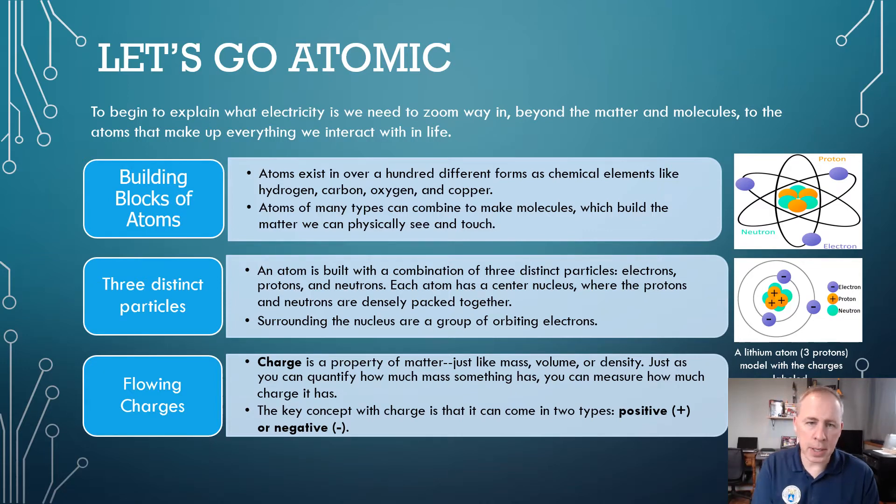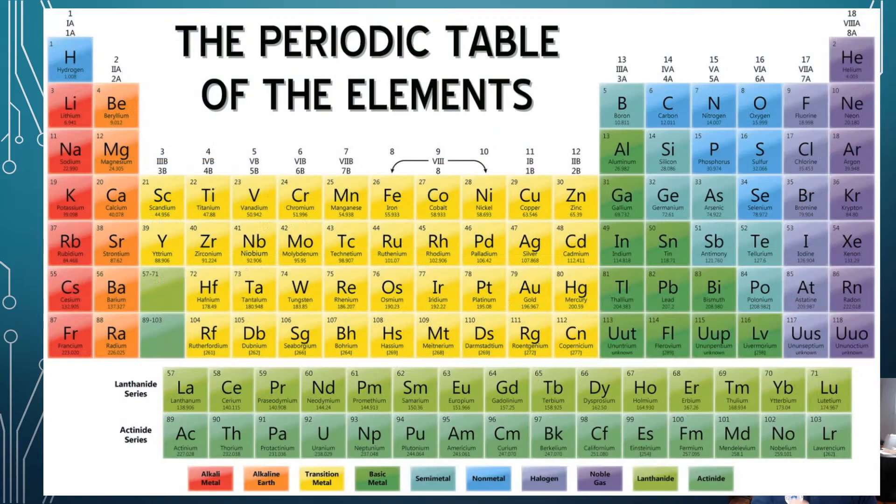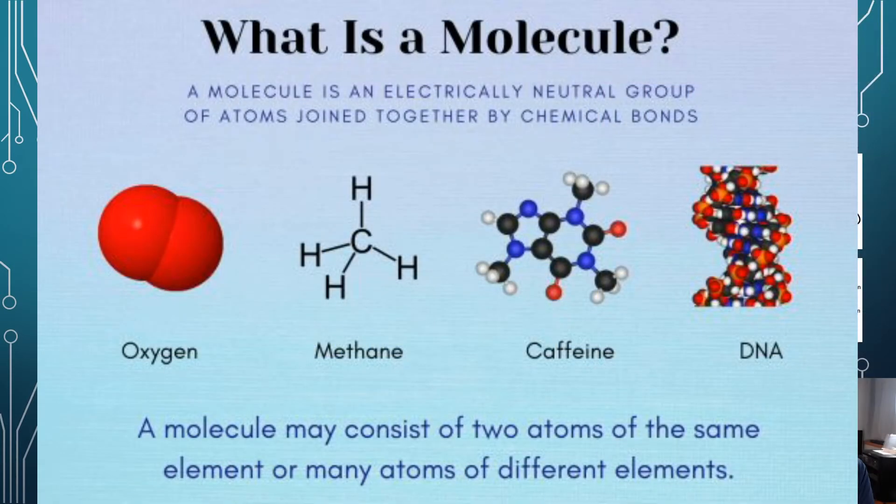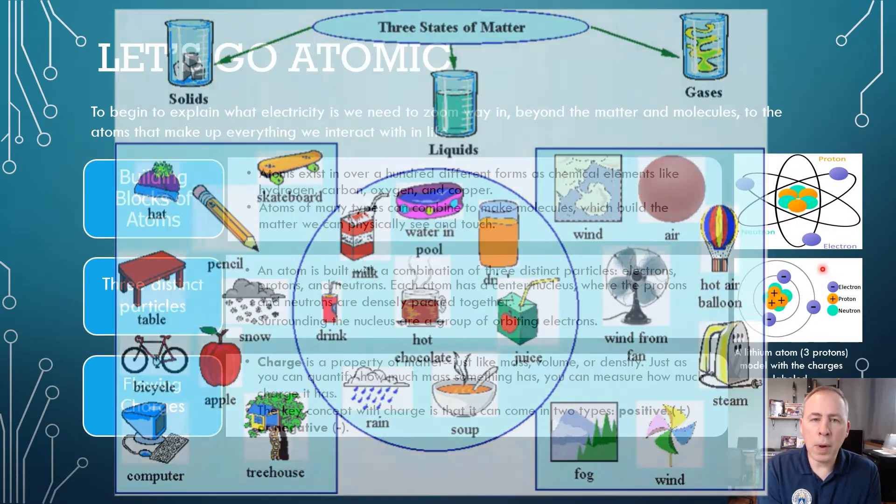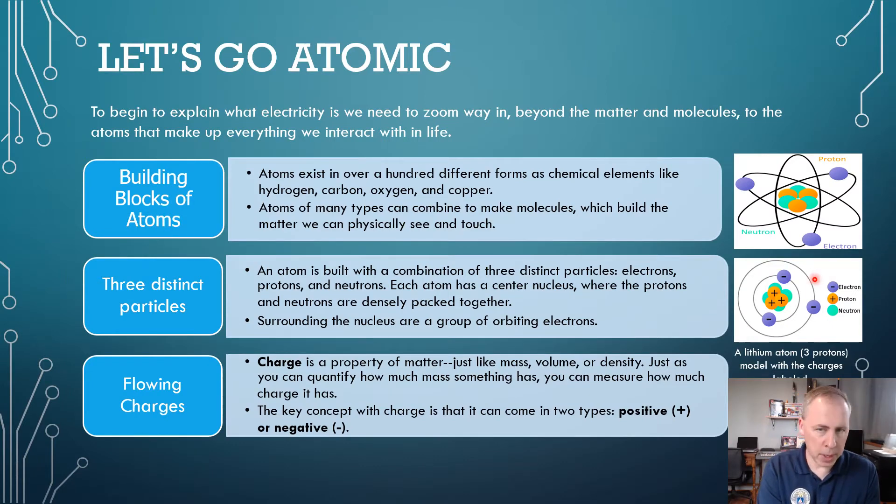Now, don't get worried. We're not going to become nuclear physicists in this lesson. But to begin to explain what electricity is, we need to zoom way in, beyond the matter and the molecules, to the atoms that make everything up that we interact with in life. So as building blocks, atoms exist in over a hundred different forms as chemical elements, like hydrogen, carbon, oxygen, and copper. Atoms of many types can combine to make molecules. And those molecules combine to make the matter that we can physically see and touch. So an atom is built with the combination of three distinct particles. We have electrons, protons, and neutrons. Each atom has a center called a nucleus, where the protons and neutrons are densely packed together. And the electrons are in an orbital pattern.